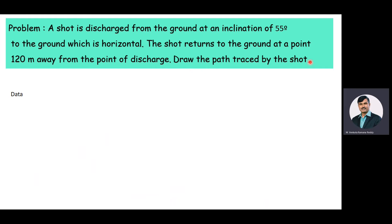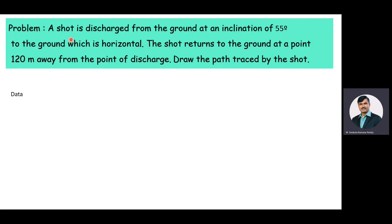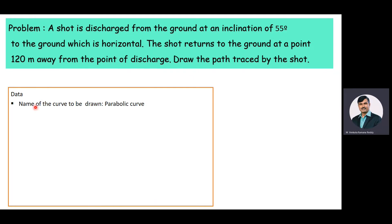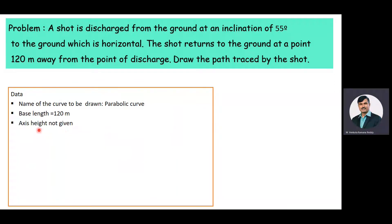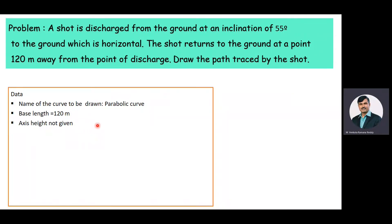Now we will extract the data from the problem. Based upon the earlier information we know that the path travel of the shot is going to be a parabolic curve. The base length of the parabolic curve is 120 meters. The axis height is not given, so we need to find the axis height.